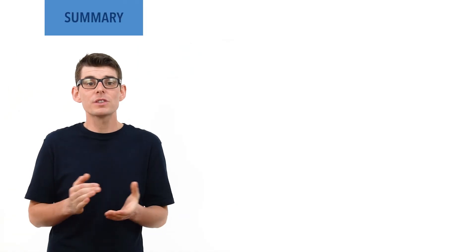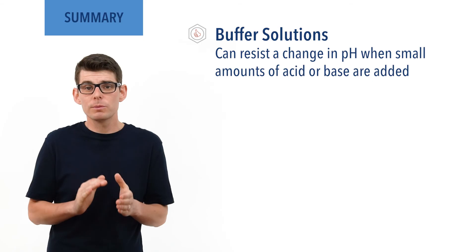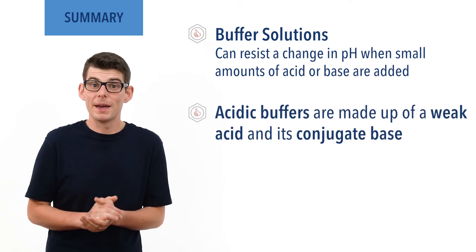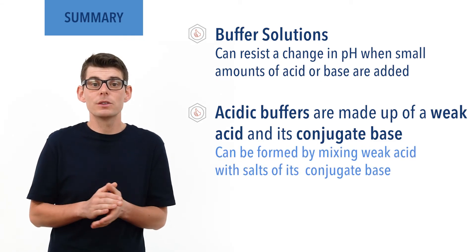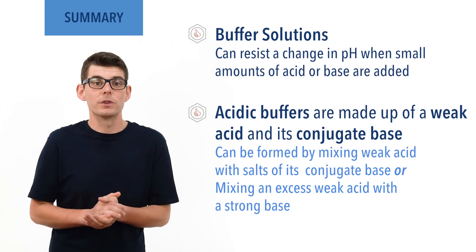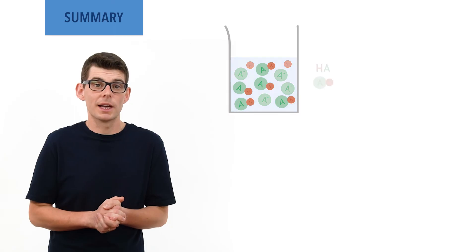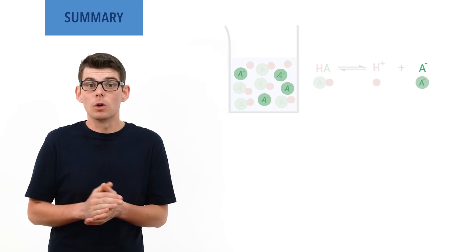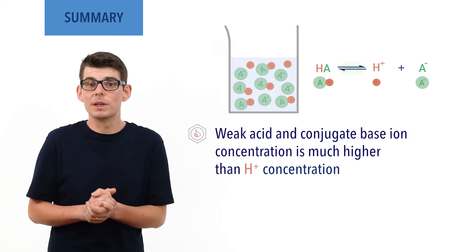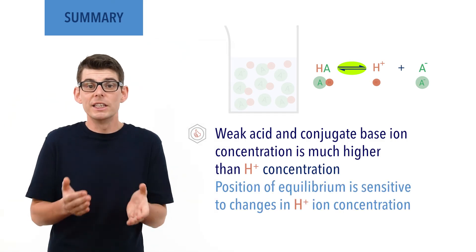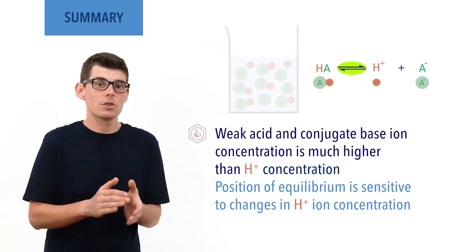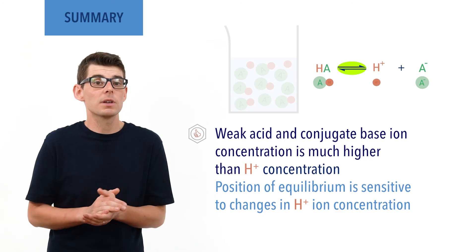To summarize: buffer solutions are mixtures that resist a change in pH when small amounts of acid or base are added to them. Acidic buffer solutions are made up of a weak acid and its conjugate base. The conjugate base can be added in the form of a soluble salt containing the conjugate base ions, or can be formed by the addition of a strong base to an excess of weak acid. In an acidic buffer solution, there is an equilibrium established between molecules of the weak acid, H⁺ ions, and conjugate base ions. Acid molecules and conjugate base ions are present in much larger concentrations than H⁺ ions, ensuring the position of equilibrium is sensitive to changes in H⁺ ion concentration, while changes to acid or conjugate base concentration have little effect.